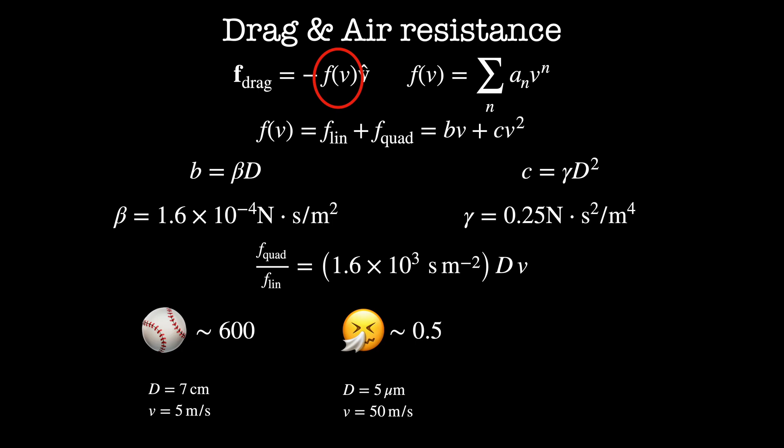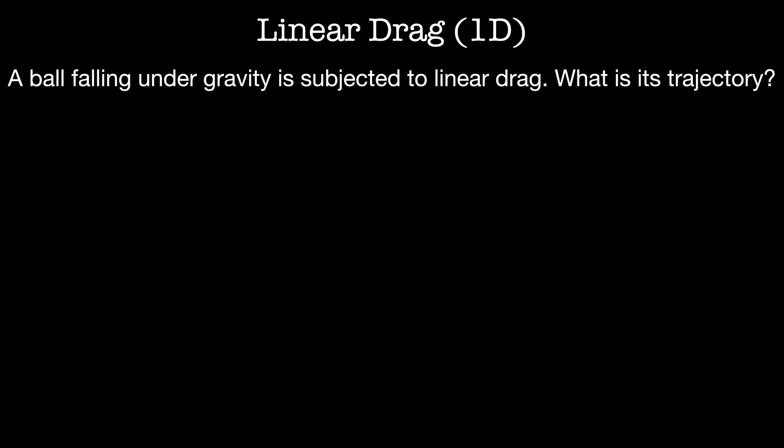Lastly, let's consider a bacteria. Imagine for a moment that bacteria can swim through air. It has a diameter of about 2 microns, and it swims at about 30 microns a second. This bacterium has quadratic to linear drag ratio of about 10 to the minus 7th. So the quadratic term is negligible, and we only need to consider the linear drag term. Said another way, the bacterium is interacting with the viscous nature of the air. Let's look at a couple of examples of linear and quadratic air resistance.